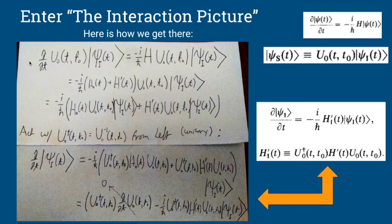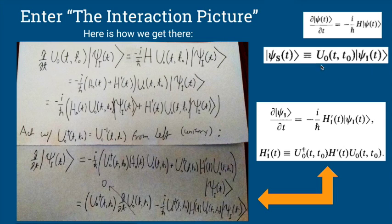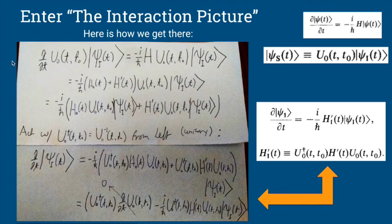The first line is just our Schrödinger equation — our original Schrödinger equation for the regular Schrödinger wave function. We can expand our Schrödinger picture wave function to be U₀ acting on the interaction wave function ψ_I. If we substitute this into the original Schrödinger equation, that's where the first line comes from. On the right side, we separate the Hamiltonian into H₀ plus H′ — distributing the operator gives us H₀ acting on U₀ acting on ψ_I, plus H′ acting on U₀ acting on ψ_I.